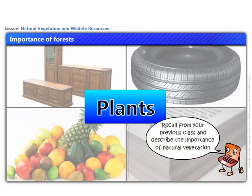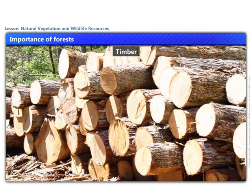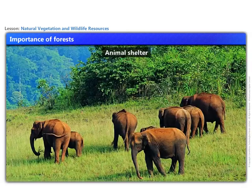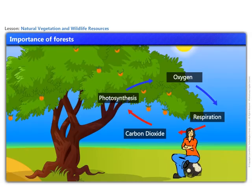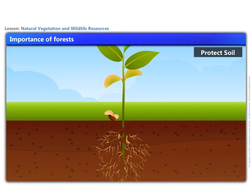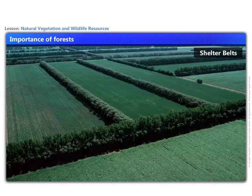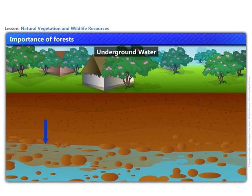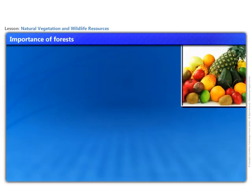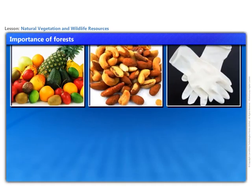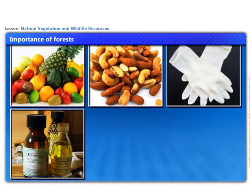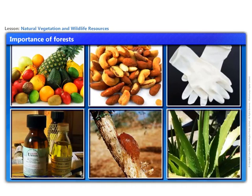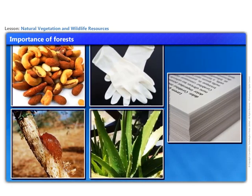Recall from your previous class and describe the importance of natural vegetation. Plants provide us with timber, give shelter to animals, produce oxygen we breathe, protect soil which is so essential for growing crops such as shelter belts, help in storage of underground water, give us fruits, nuts, latex, turpentine oil, gum, medicinal plants, and also the paper we use.